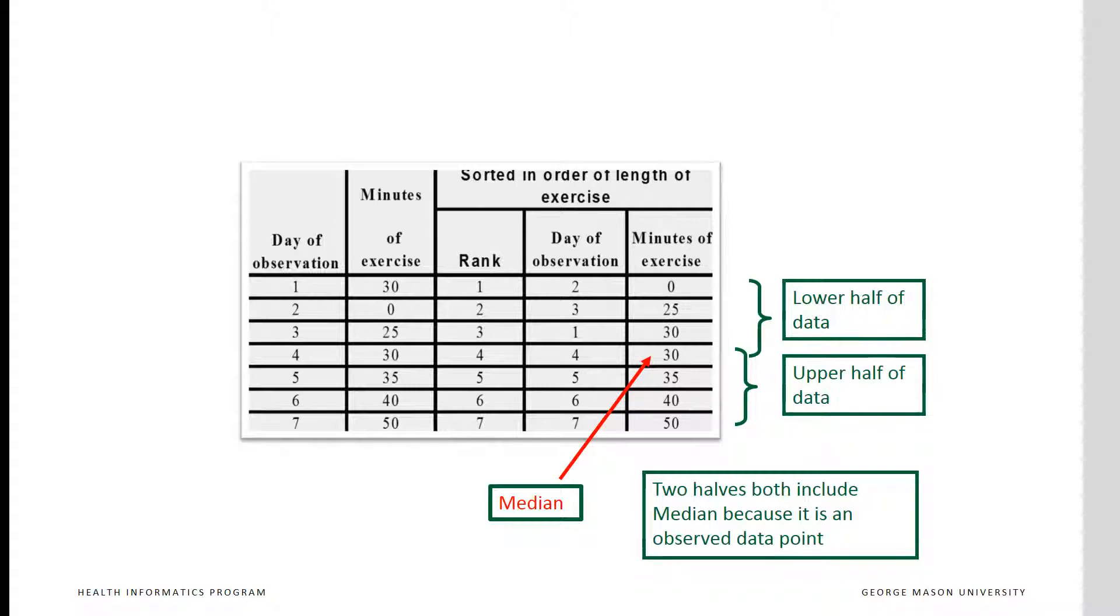Next, we calculate the median. This is the value where half the data, 7 times 0.5 equals 3.5, or 3 points, are below it, and half the data, or 3 points, are above it. The fourth data point with value of 30 is the median. 3 data points are below it and 3 above it.